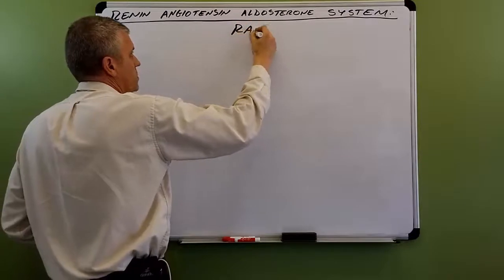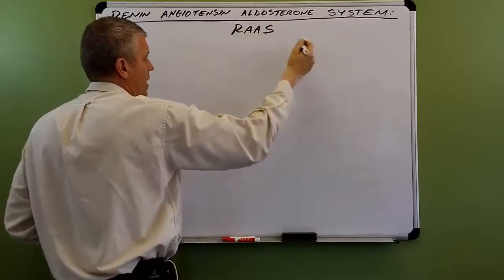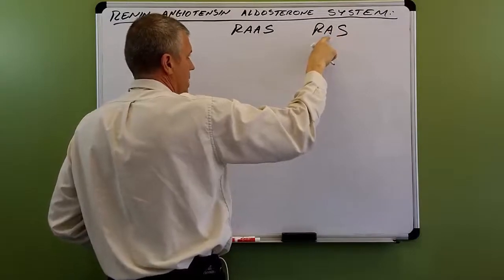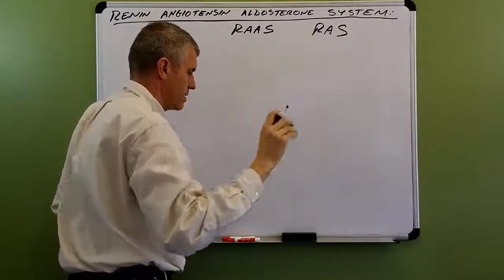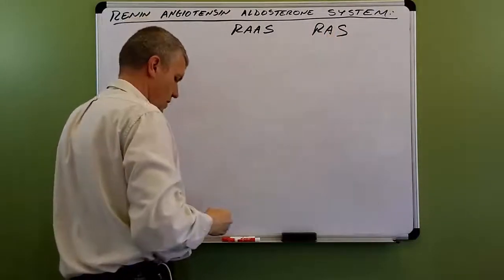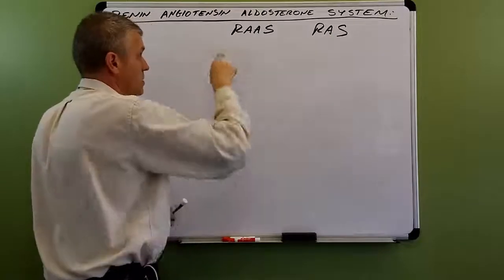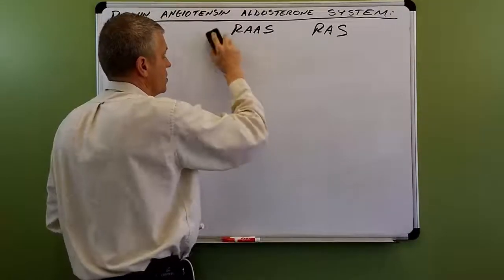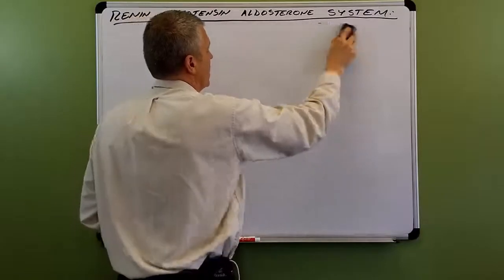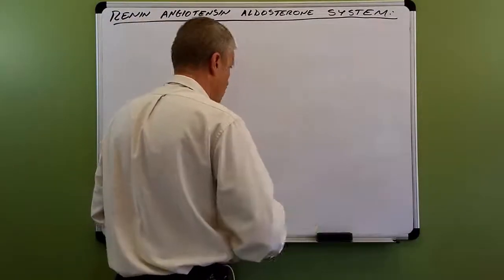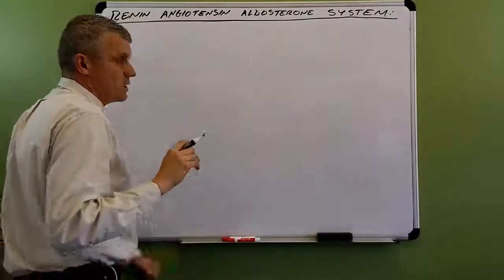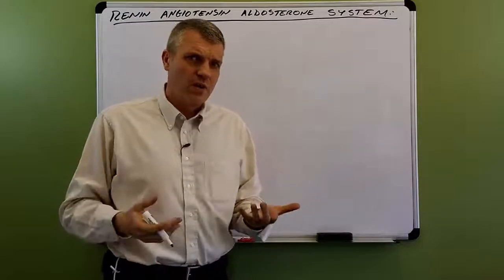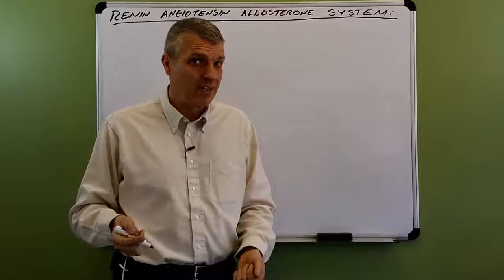The short form is usually written as RAAS or just RAS. RAS is common usage — Renin-aldosterone system — a shortened form of the longer name. Both are generally acceptable. This is a system that helps to maintain blood pressure, and it also helps to maintain water and electrolyte balance.